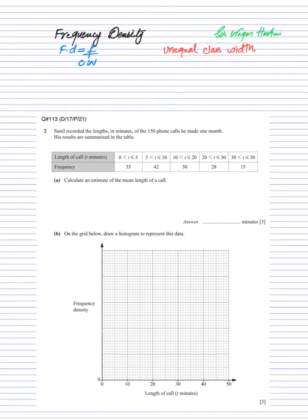Now let's take an example from December 2017 paper 2.1. If you focus on the class width, that means the difference between the upper and lower class: 5 minus 0 is 5, 10 minus 5 is 5, 20 minus 10 is 10, 30 minus 20 is 10, and 50 minus 30 is 20. Now you can observe that the difference is not the same.